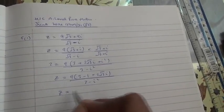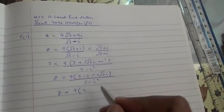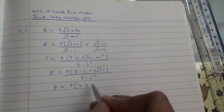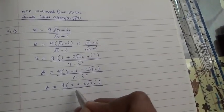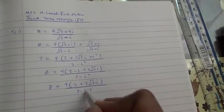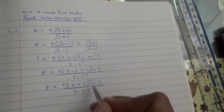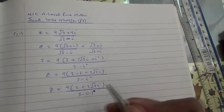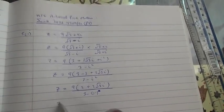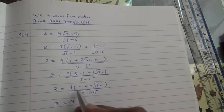So z equals 9 into 3 minus 1 is 2, plus 2√3i, divided by 3 minus minus 1, because i² is minus 1. Therefore, z equals 9 times 2, which is then 18...